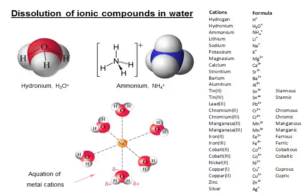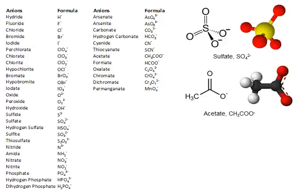Looking at a list of common anions, we can see familiar ones at the top — the halides with a 1- charge: fluoride, chloride, bromide, and iodide. We then have a diverse range of other anions, many of which are oxo-anions. It's worth noting that some of these don't actually exist in water, like oxide and sulfide, because they're extremely strong bases and will protonate to form their conjugate acids.